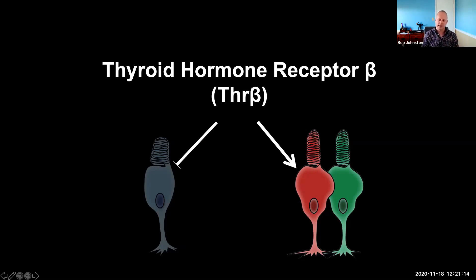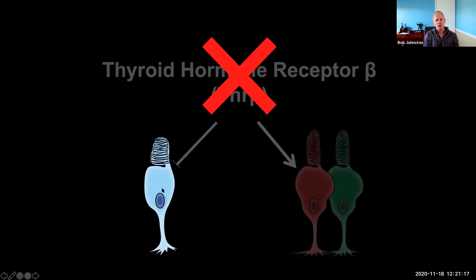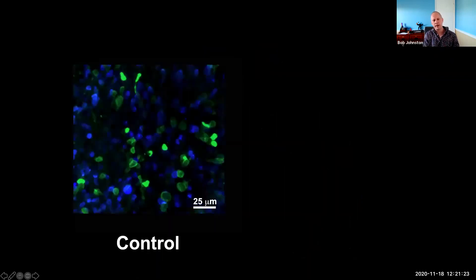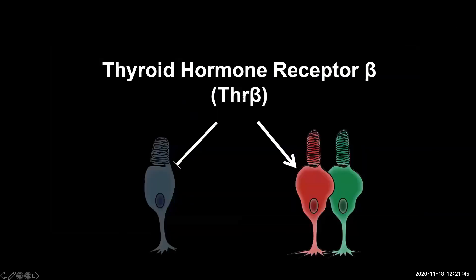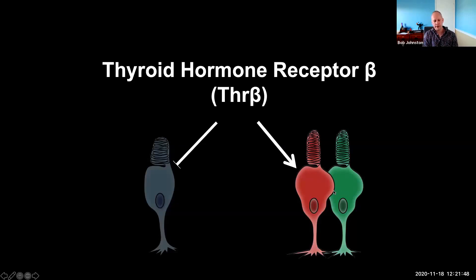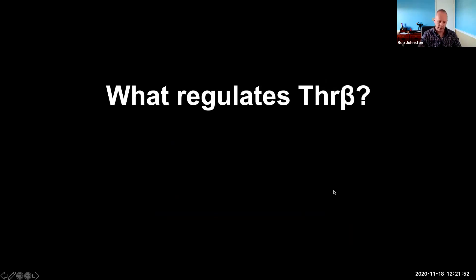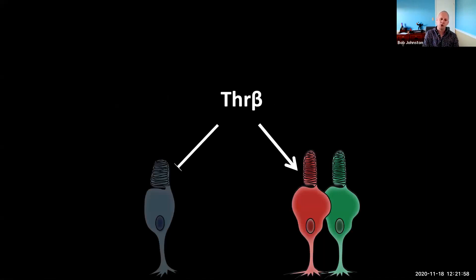Kiara did this experiment. In controls, we see our mix of blue and red-green cones. In the thyroid hormone receptor beta null mutant, we saw a really striking phenotype where we generated human retinas that only had blue cones. This tells us that this receptor is required for red-green cone fate. The next question is: what regulates thyroid hormone receptor beta? This comes in the form of thyroid hormone, whose active form is called T3.